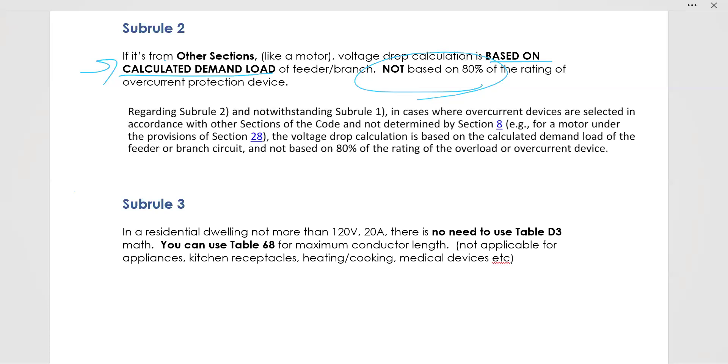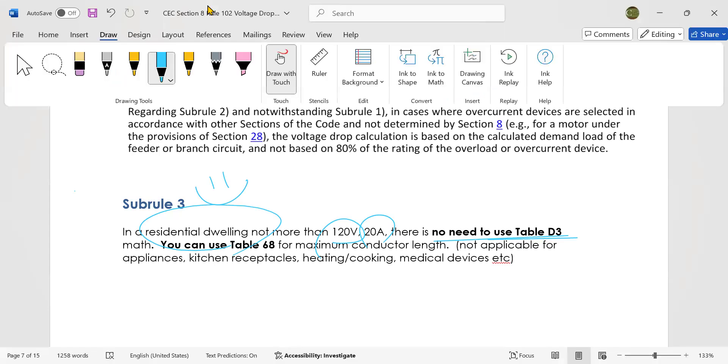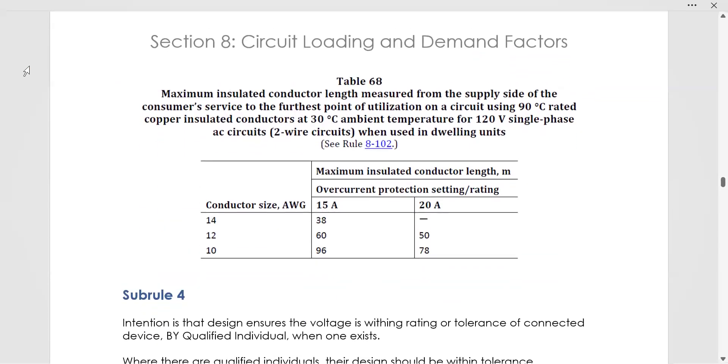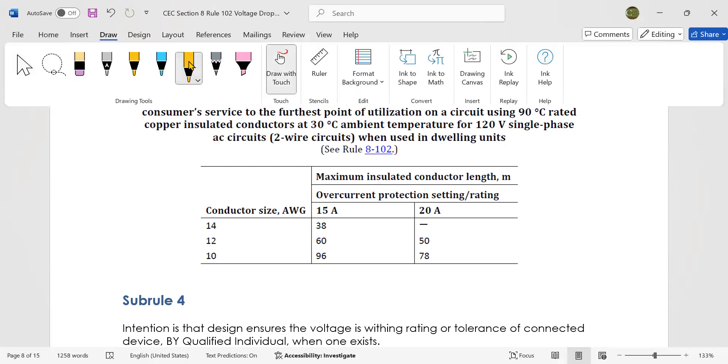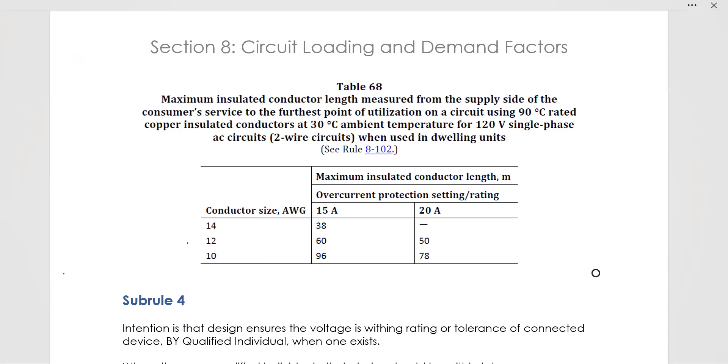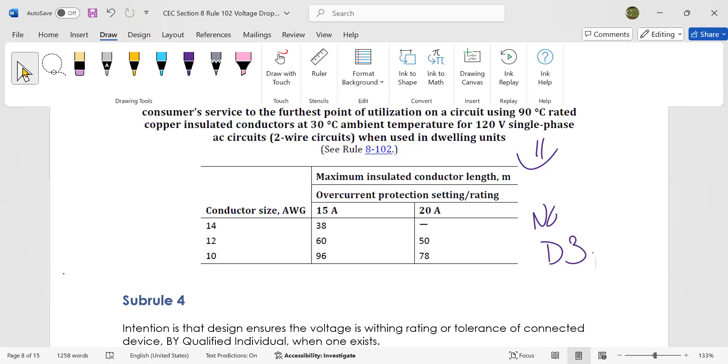Subrule 3 also makes us happy because it says if you're in a residential dwelling, not more than 120 volts and 20 amps, there is no need to use our evil table D3 math. You can just use table 68 instead. So in your codebook, you have to flip a lot to find all of these subsections and rules and everything and find table 68. But here it is here, table 68. If you're in a residential setting of 120 volts, less than 20 amps, then you can use this happy little circuit. You can use, I mean, this happy little table instead. And we can use table 68 and no D3 in residential. That's kind of cool. So we're starting to like this. We're starting to like this section. Okay, here we go.